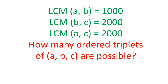It's given that there are three numbers A, B, and C — positive integers. When you take the LCM of two numbers at a time: LCM of A and B is 1000, LCM of B and C is 2000, and LCM of A and C is 2000.